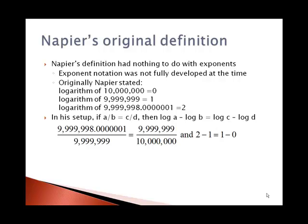In his setup, if we had a proportion a over b equals c over d, if those numbers were related in terms of division, then the log of a minus the log of b was equal to the log of c minus the log of d.